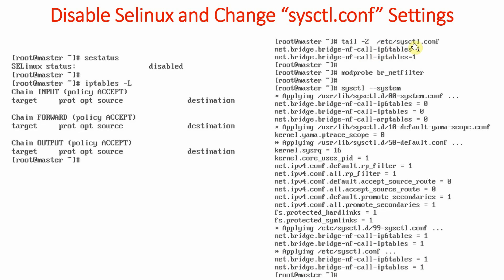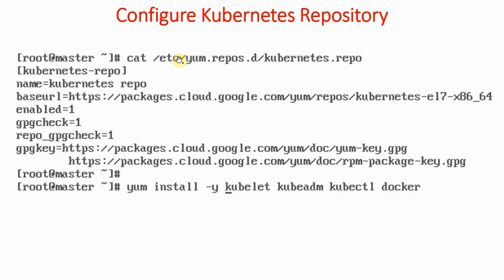Next, we configure the Kubernetes repository from which we install Kubernetes. We create a file called kubernetes.repo in the /etc/yum.repos.d/ directory. The file specifies the repository name as 'kubernetes', the baseurl for downloading packages, enables the repository, enables GPG check, repo GPG check, and imports the GPG key.